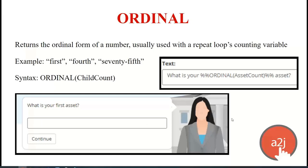The ordinal function returns the ordinal form of a number — first, second, third, 75th, and so on. You typically use this on a repeat loop's counting variable. So instead of repeatedly saying 'what is your next asset,' you can say 'what is your first child's name,' then on the next iteration, 'what is your second child's name,' and so on. The syntax is: ordinal, then the variable. Best practice is to include brackets even if there's no space in the variable name.